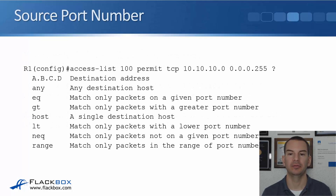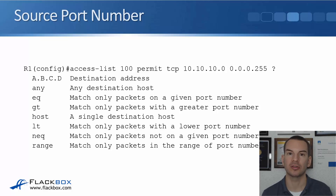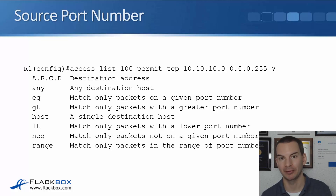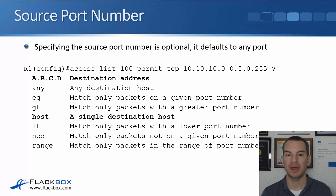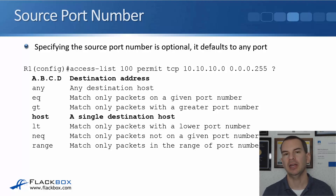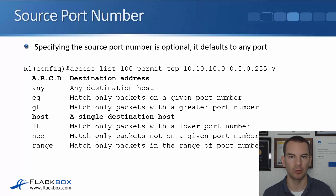Next up, we have the source port number. You can say 'equals' to match an exact individual source port number, or 'less than' a particular number, 'greater than' a particular number, or you can specify a range. You can also say 'neq', meaning it's not this particular port number. Specifying the source port number is optional and it defaults to any port. Very often when traffic is coming from a host, it's going to use an ephemeral port, which is just a random high number port. It's the destination port that we're more likely to be interested in — for example, port 80 for HTTP.